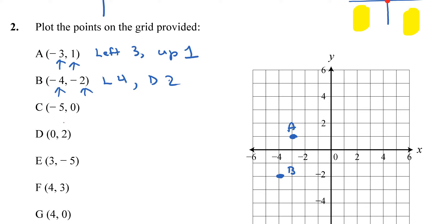For point C, negative 5 comma 0 means go left 5 and don't move vertically — so point C is right here. For point D, 0 comma 2 means don't go left or right but go up 2, so letter D is up here.